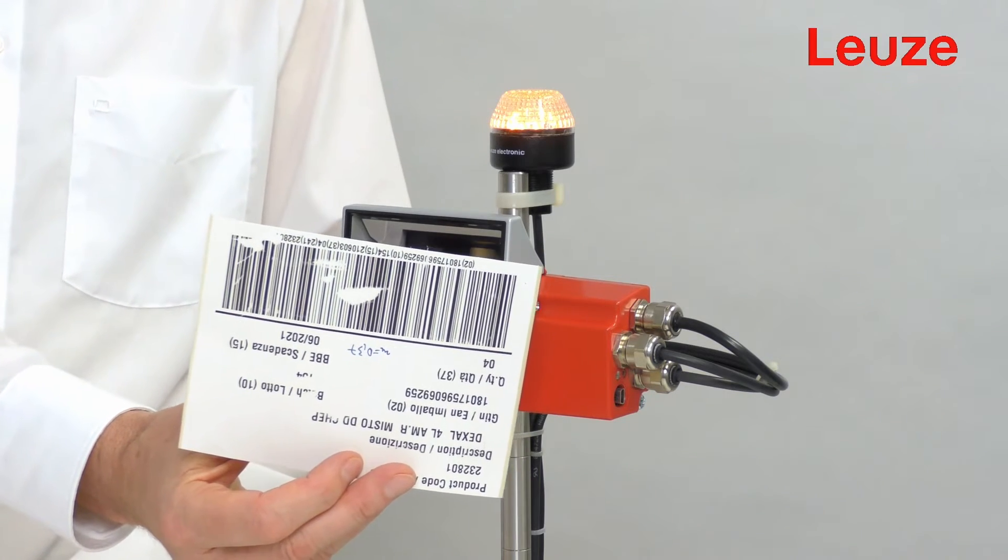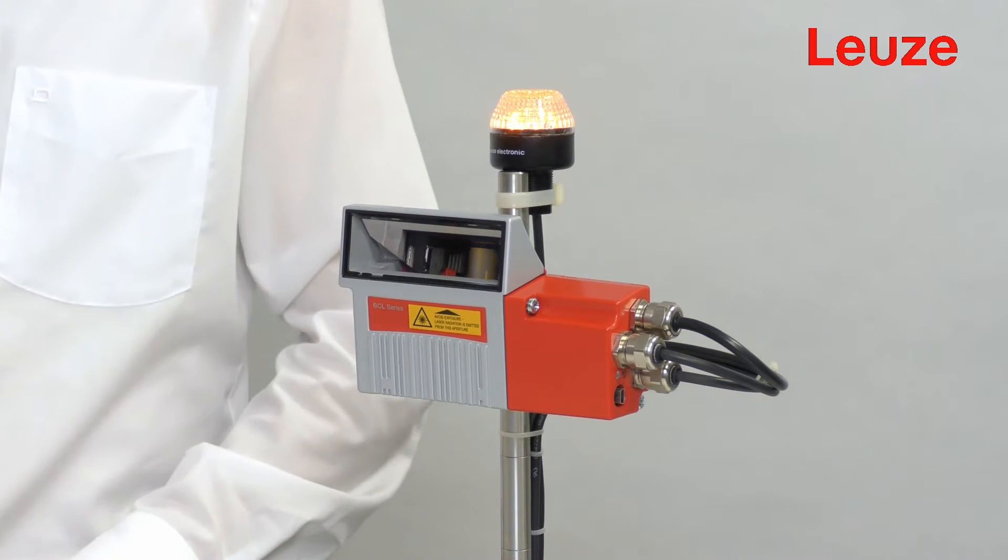Do you recognize labels like this? Do they look familiar to you? Unreadable, damaged codes? Normally, this leads to a no-read, which is why the product has to be separated and manually reworked. We want to avoid this for our customers.